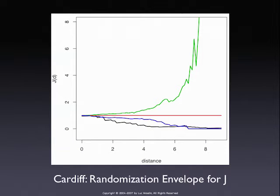The J-function for our juvenile Cardiff example is the black line. The red line is a horizontal at value 1 — horizontal because it does not depend on distance, unlike the G and F functions. Our estimated J-function is below 1, suggesting clustering, which is consistent with all the other tests. The green and blue lines are the randomization envelope, and since the black line is outside this envelope, we reject the null hypothesis of complete spatial randomness.